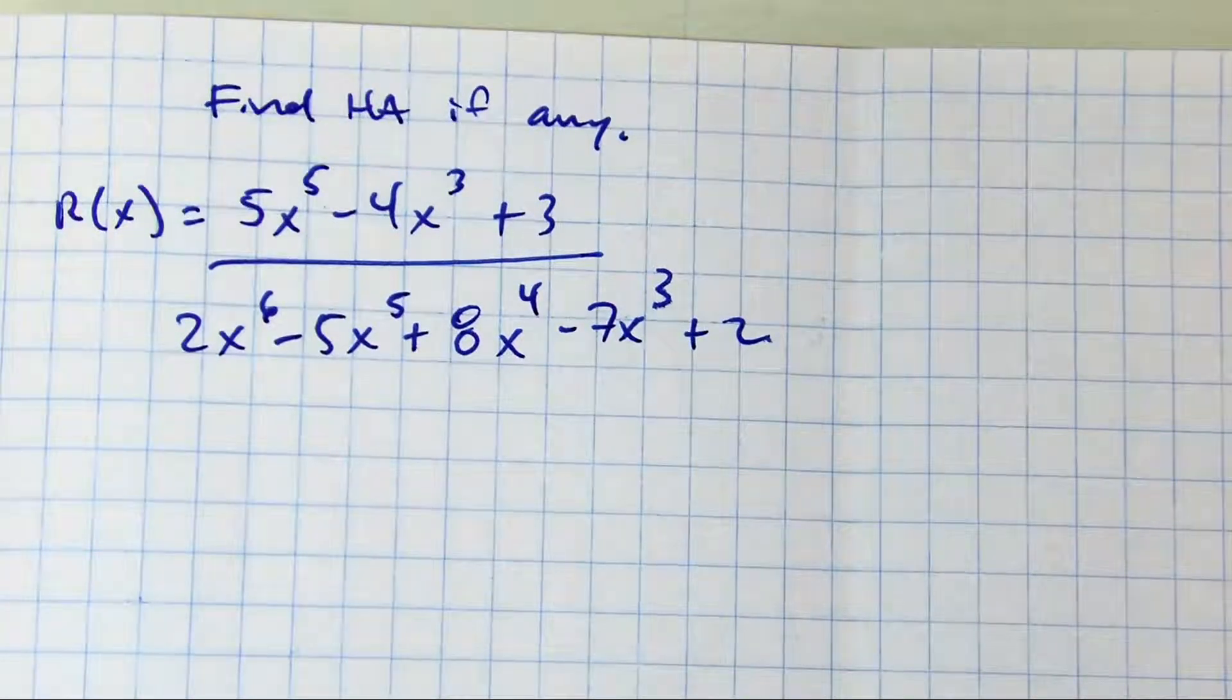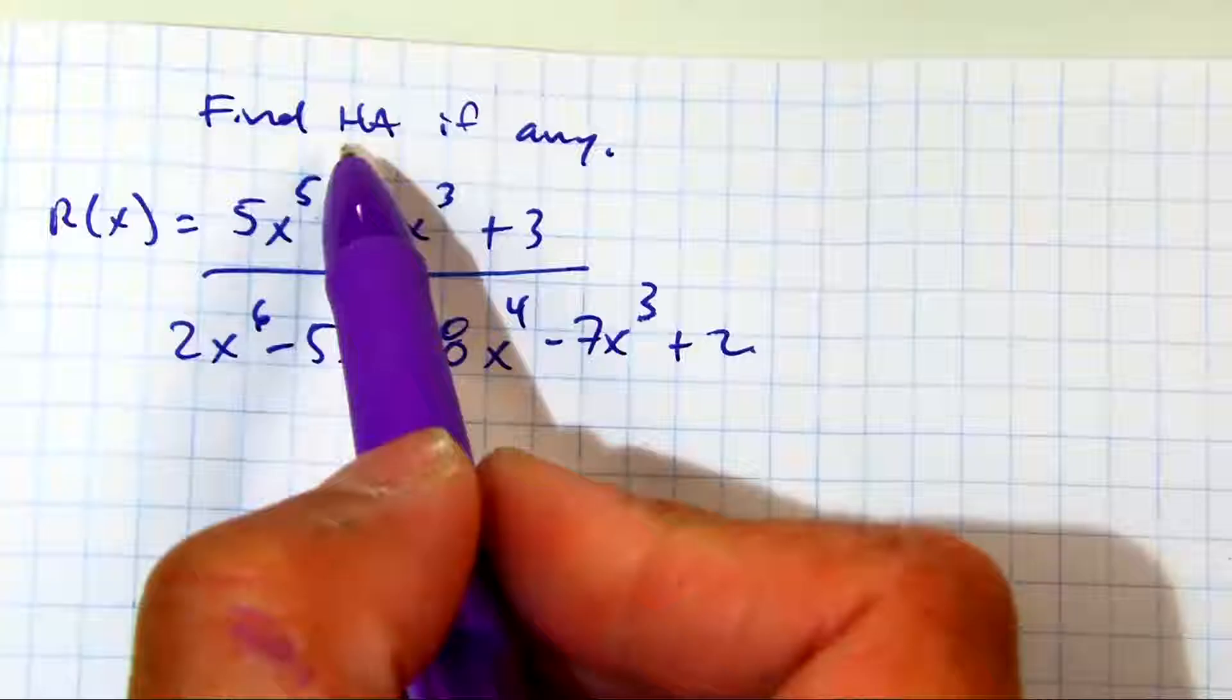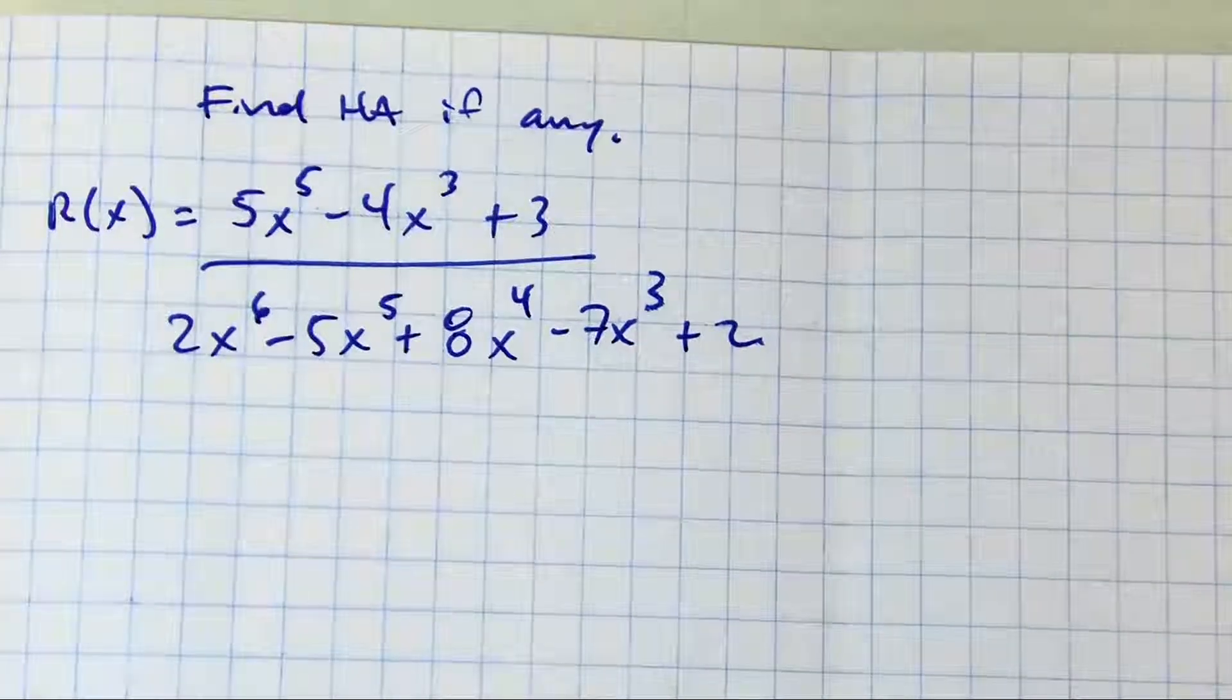This looks very intimidating, but all we're supposed to find is the horizontal asymptote. That's all we have to do.